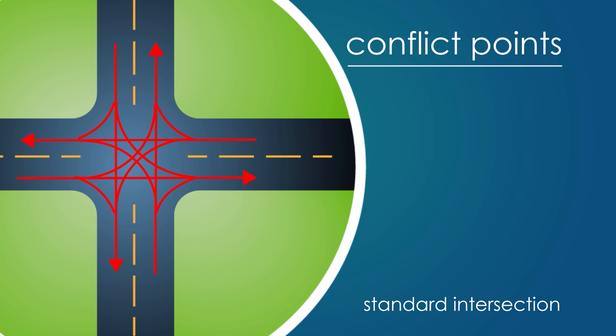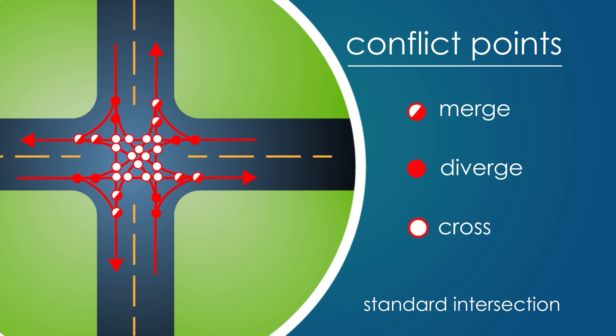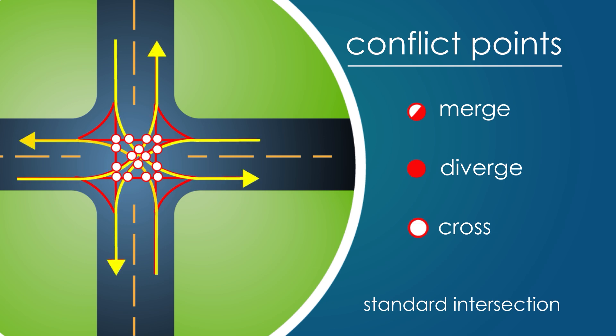Here are the conflict points of a standard intersection. All conflict points have the potential for harm, but left turn conflicts are especially serious. Of the 32 vehicle-to-vehicle conflict points at a conventional intersection, 12 are associated with vehicles turning left.